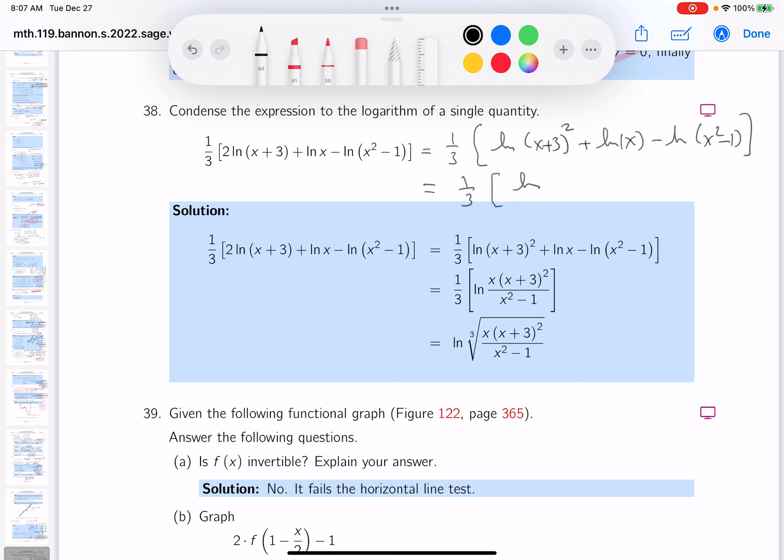this is going to be the natural log. Let's see, it's going to be x plus three squared times x, and then divide by x squared minus one. I'm going to still try to simplify that and I realize I'm